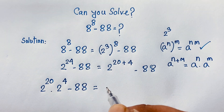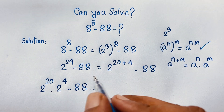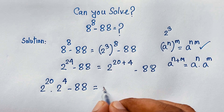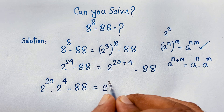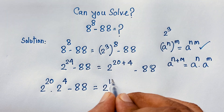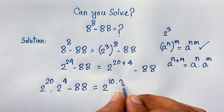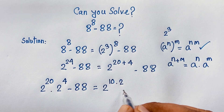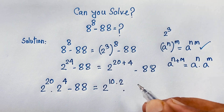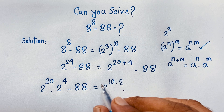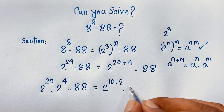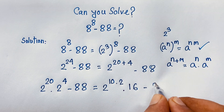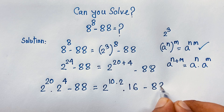Now here 2 to the power 20. So you can say it will be 2 to the power 10, times 2 — 10 times 2 will be 20. Then here 2 to the power 4 it will be 16, minus 88.